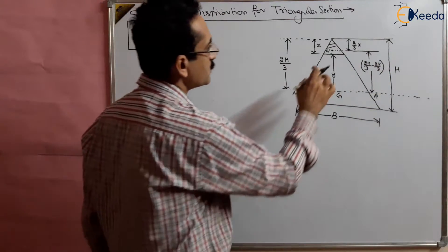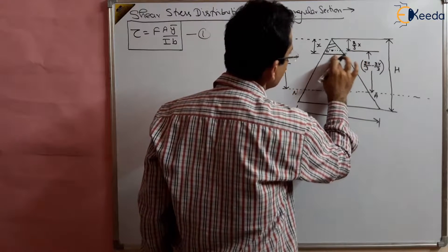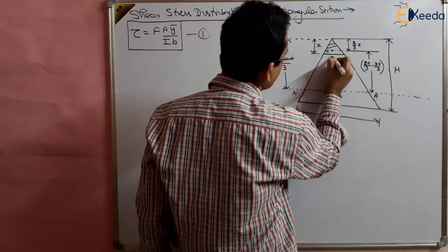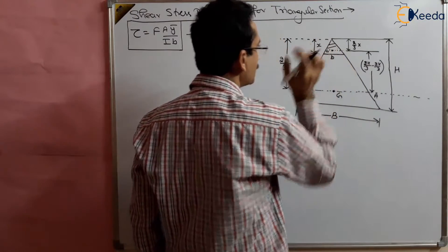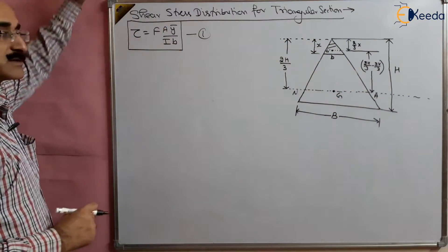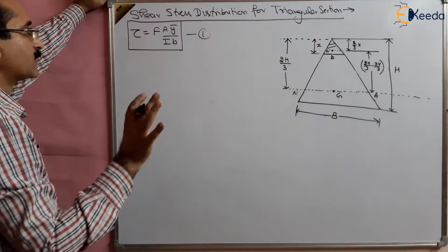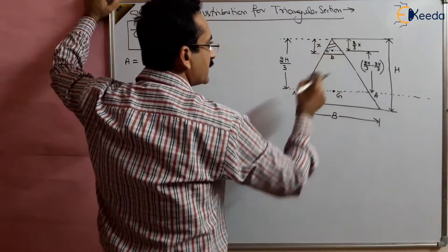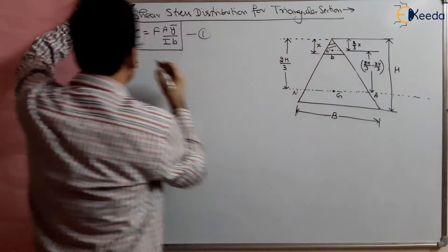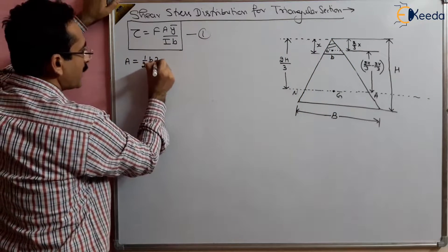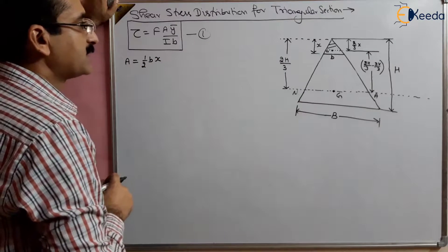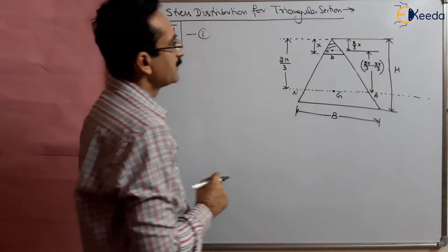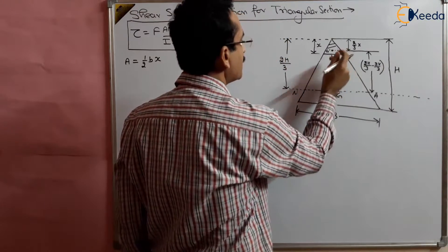Area, ȳ, and b are all variable. The area of the small triangle is half × base × height = (1/2) × b × x. However, b and x are unknown. We can replace b using similarity of triangles: small b / capital B = small x / capital H, so x = (b/B) × H.